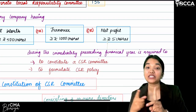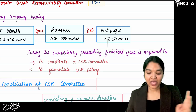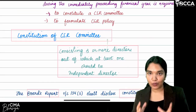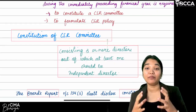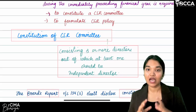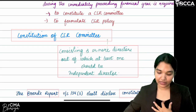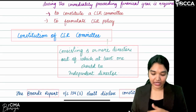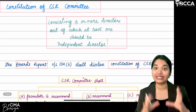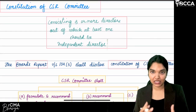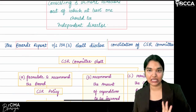If any of these three limits are satisfied, the company has two obligations: it must constitute (form) a CSR committee and formulate (prepare) a CSR policy. The CSR committee must consist of a minimum of three or more directors, out of which at least one must be an independent director. The details of the composition of the CSR committee must be disclosed in the board's report.